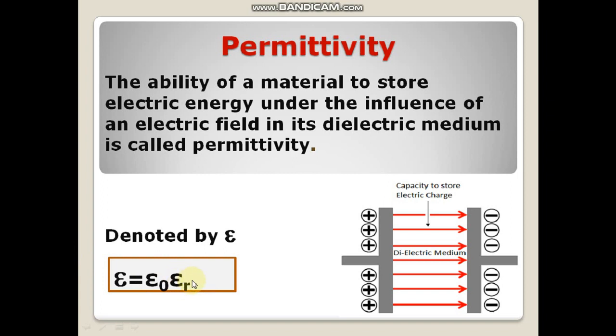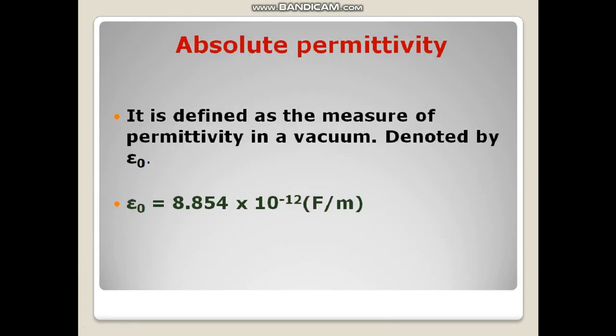Next, absolute permittivity. It is defined as a measure of permittivity in a vacuum and denoted by epsilon_0, where the value of epsilon_0 is 8.854 times 10 to the power minus 12 farad per meter.